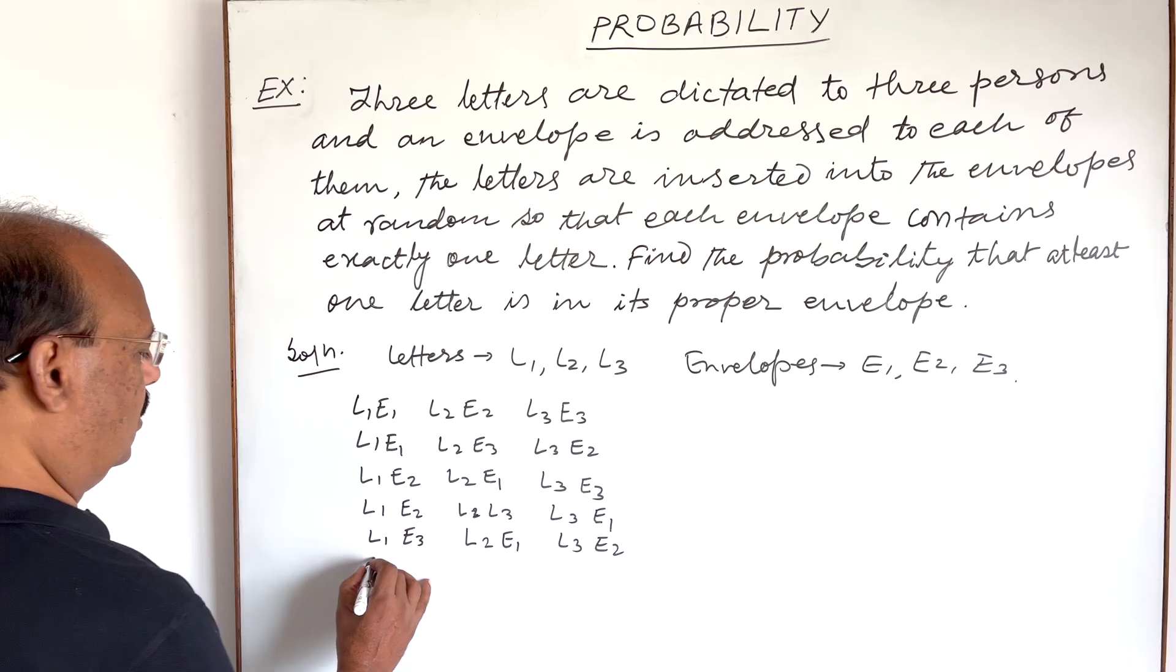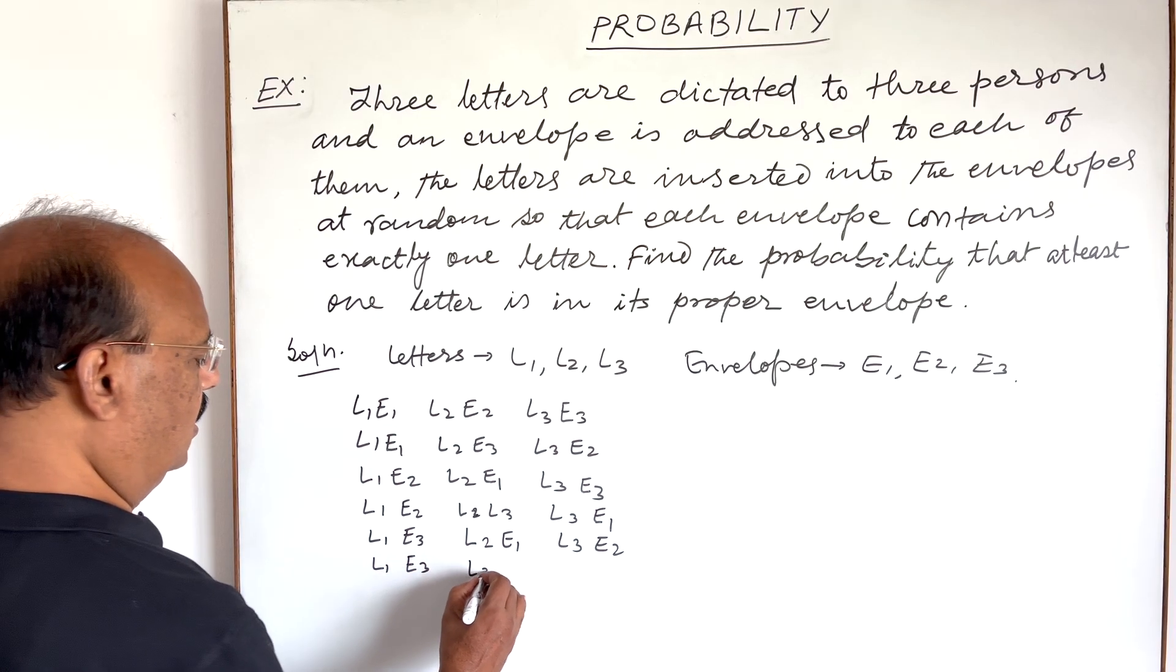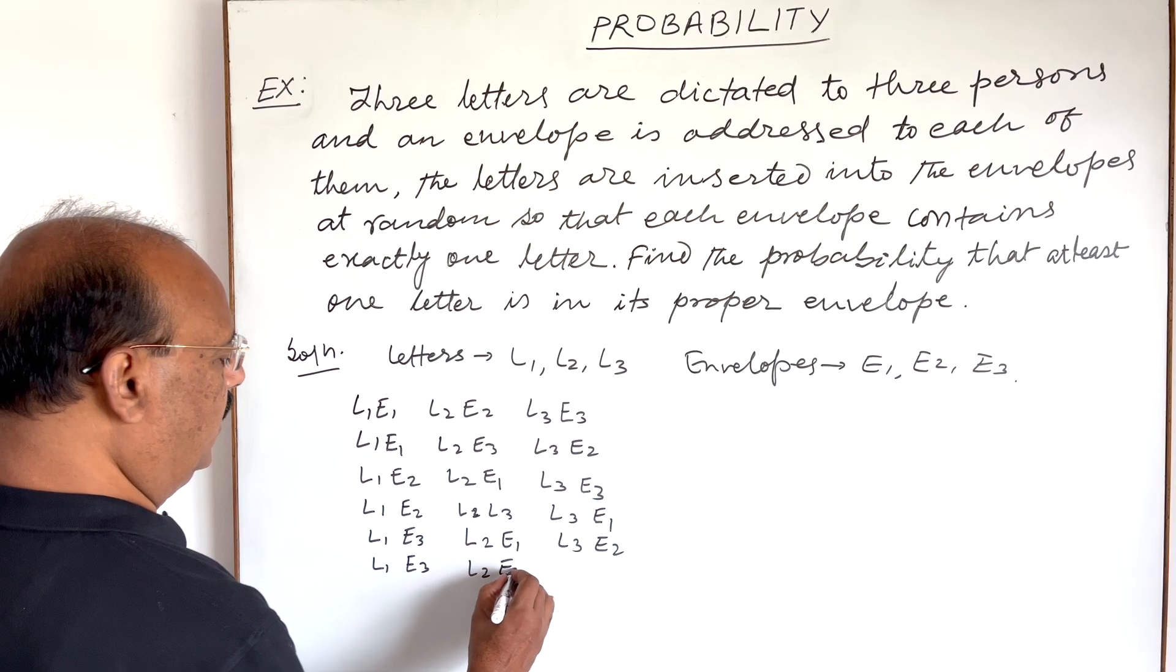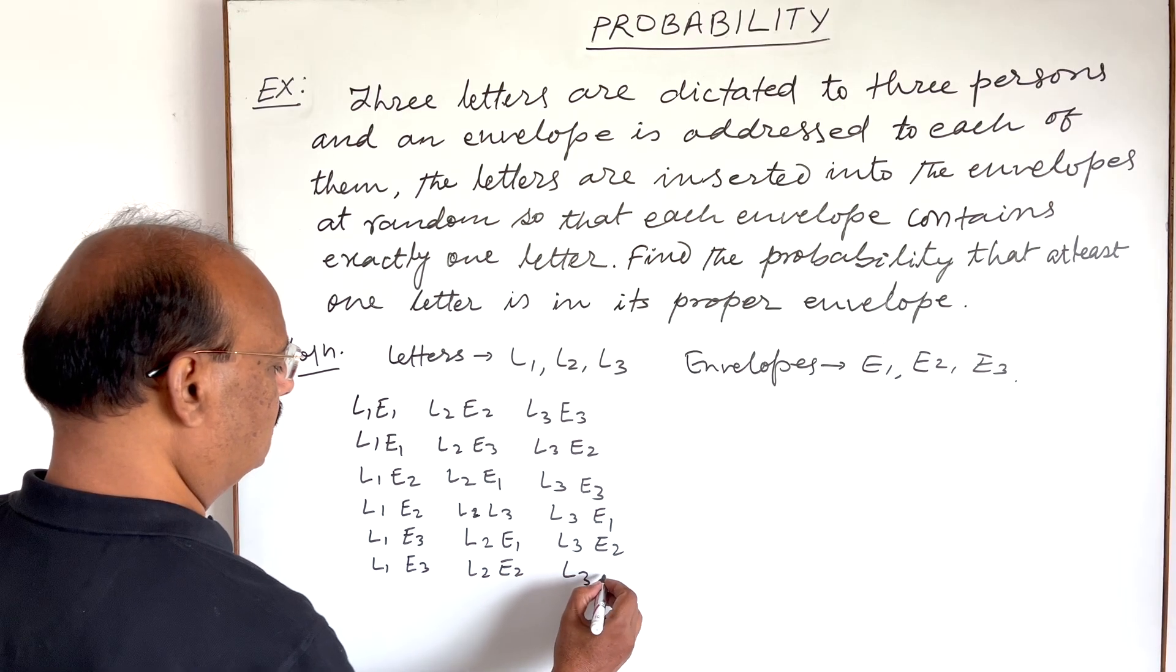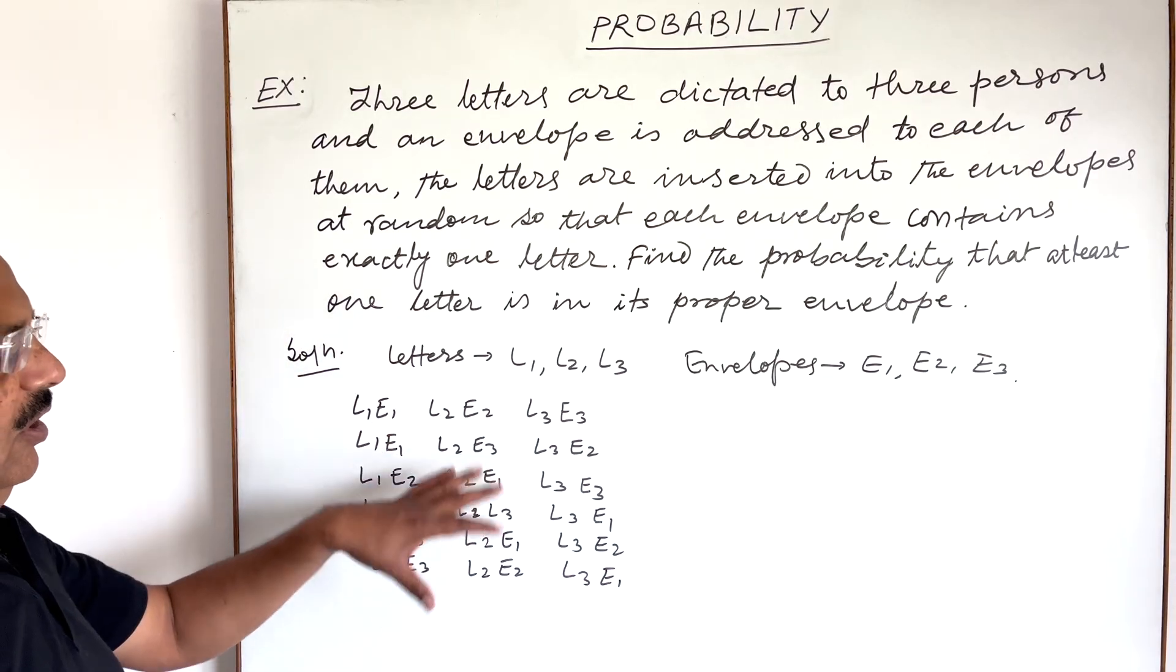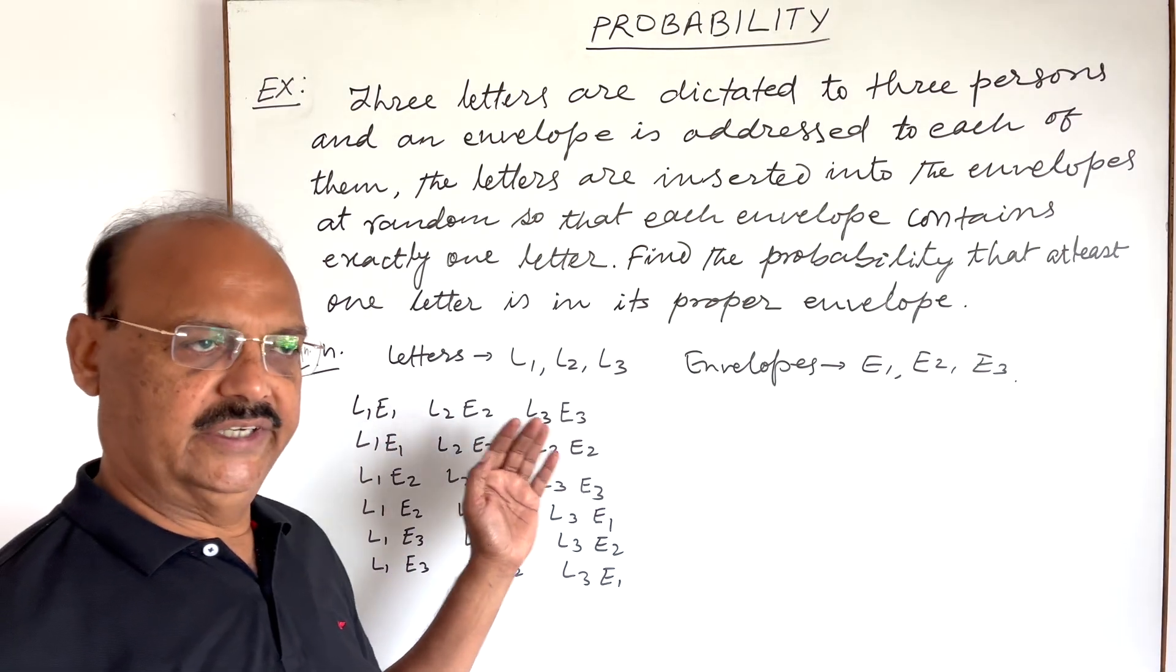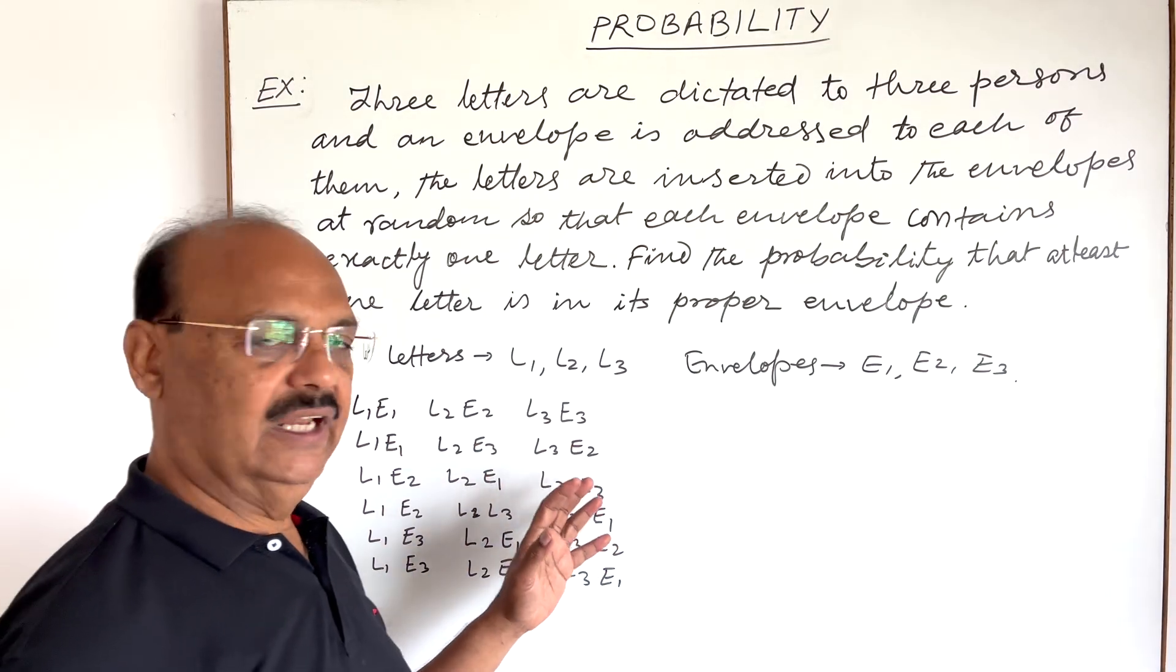The sixth option is L1 in E3, L2 in E2, L3 in E1. These are the maximum possible options to insert letters in different envelopes.